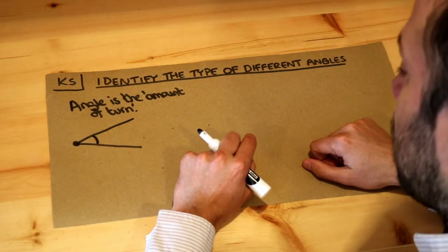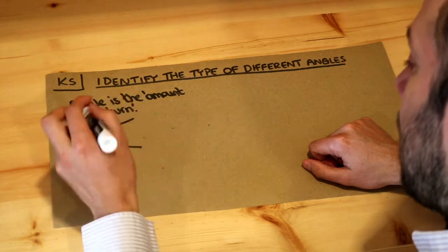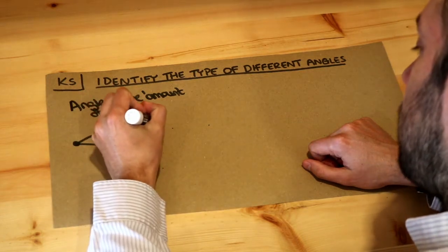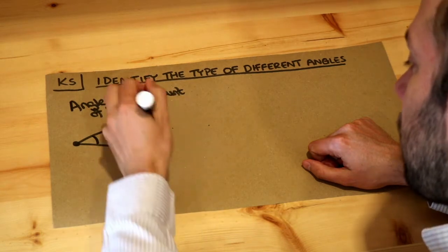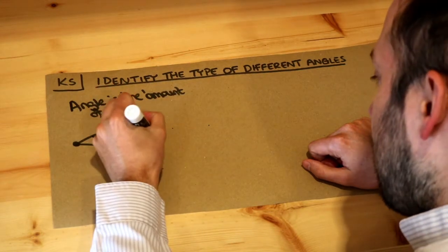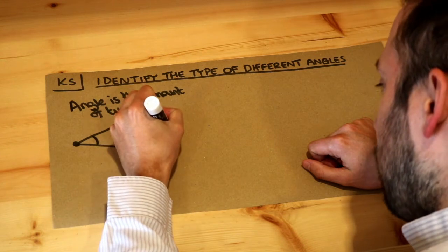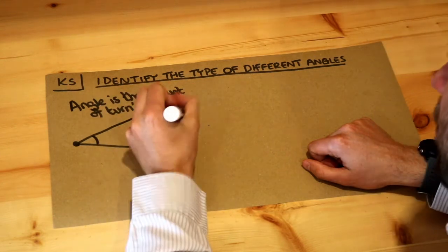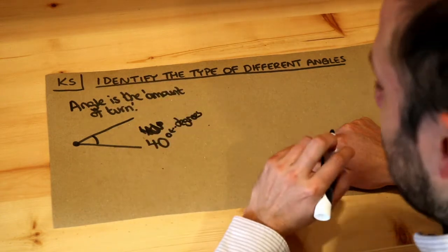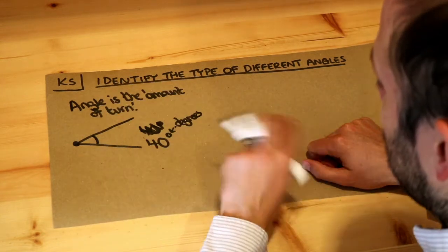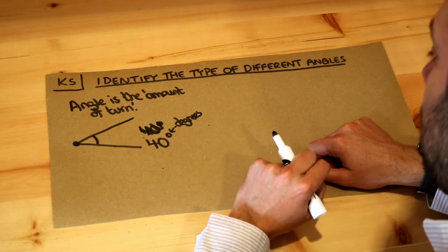And angles are generally measured in degrees. So this might be an angle, for example, of 40 degrees, and this symbol here which is like a little circle, that is the degrees symbol. And believe it or not, there are other units for angles, but most of you will just see degrees as a unit for angles.